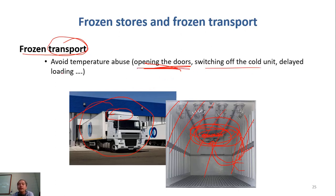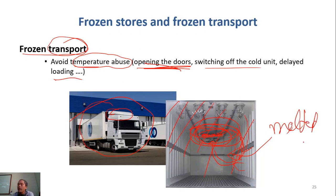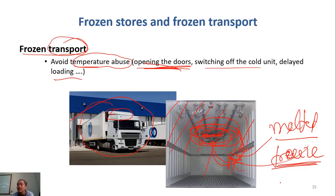If we open and close the door many times, we regain heat from the environment and the temperature fluctuates — this is called temperature abuse. If food gets melted during transport and then re-freezes inside the truck, it undergoes very slow freezing, since the truck's cooling power is weak. From the factory you may have had fast freezing, but this accidental re-freezing is very slow freezing, which is not good for the food quality, as discussed in previous parts.